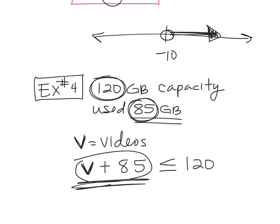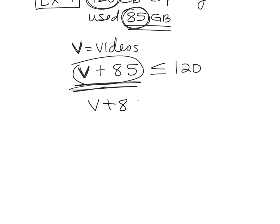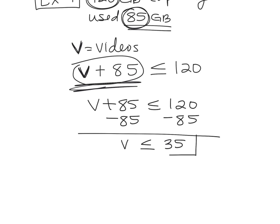So how many gigs do we have to work with for video space? What do we got to do? Subtract it. If we're doing V plus 85 is less than or equal to 120, we're just going to take that 85 away. So it's V is less than or equal to, what's 120 minus 85? 35. So you have 35 gigs available, so your videos can be 35 gigs or less to put on your hard drive. If you had more than that, it's going to say your hard drive or your disk is full, and you have to delete some other stuff first. Questions on that?